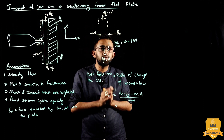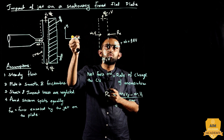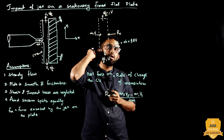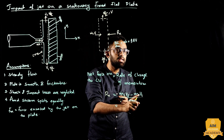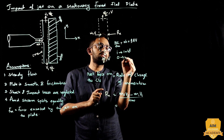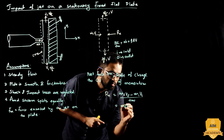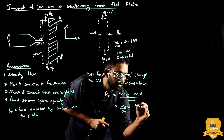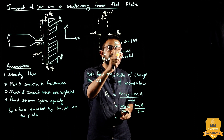This is the control volume approach, as opposed to the closed system approach. The flow is entering at the inlet and leaving at the outlet. Applying Newton's second law: force equals mass flow rate at outlet times velocity at outlet, minus mass flow rate at inlet times velocity at inlet. Mass flow rate is M-dot.